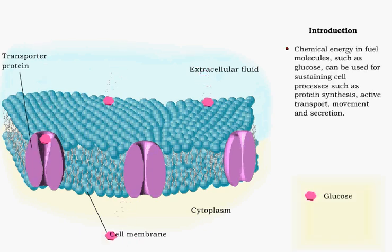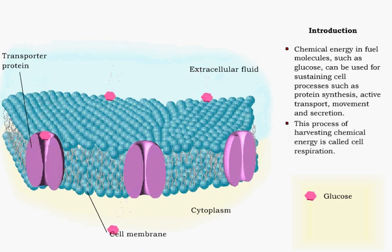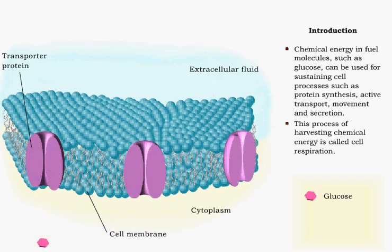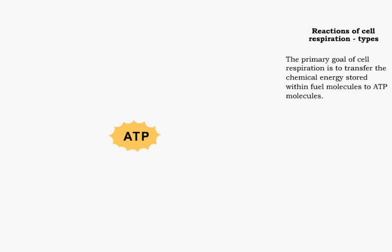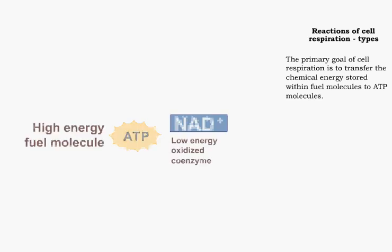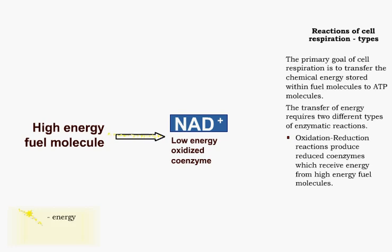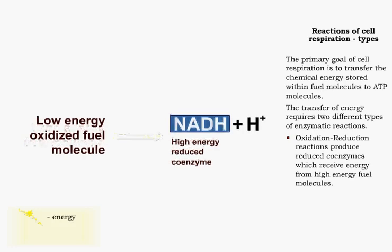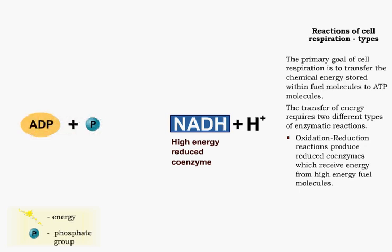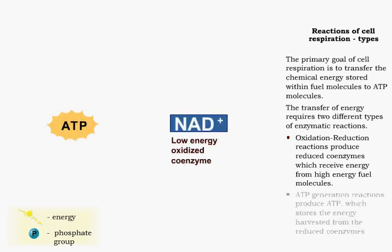All cells need fuel to maintain homeostasis and perform work. The mechanism for harvesting energy from fuel molecules is called cell respiration. The goal of cell respiration is to generate the energy molecule ATP. To accomplish this, two different enzymatic reactions must take place. Energy is transferred from the fuel molecule to intermediate molecules called reduced coenzymes using an oxidation-reduction reaction. The reduced coenzymes then transfer the energy to ATP in a separate reaction.